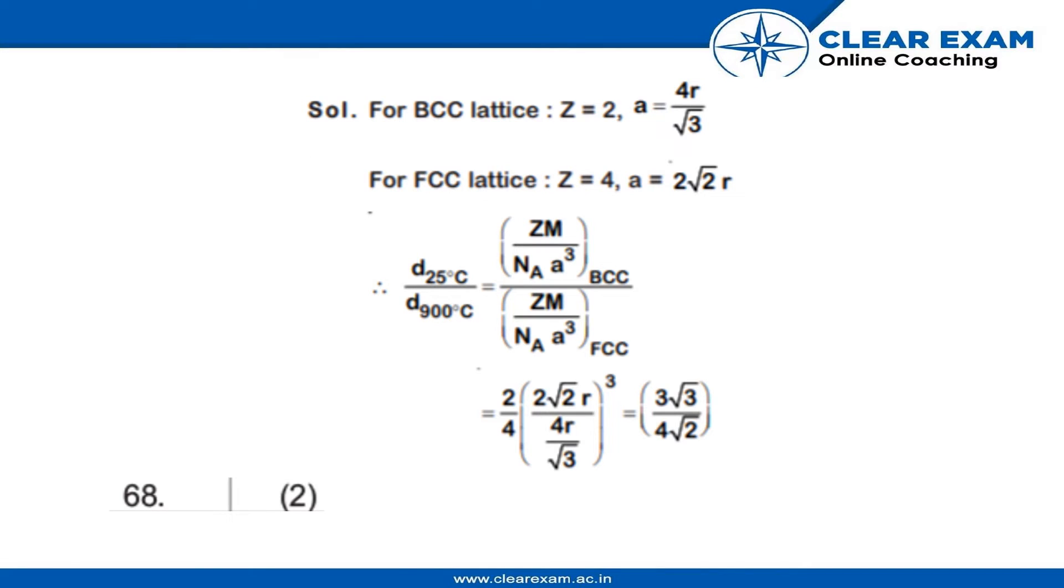So here we know that for BCC, Z equals 2 and A equals 4R by root 3 because it's a BCC structure. But for FCC structure, Z becomes 4 and A becomes 2 root 2R.